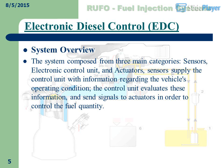System Overview: The system is composed of three main categories — Sensors, Electronic Control Unit, and Actuators. Sensors supply the control unit with information regarding the vehicle's operating condition. The control unit evaluates this information and sends signals to actuators in order to control the fuel quantity.